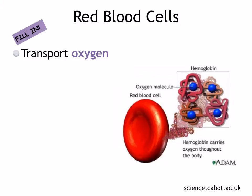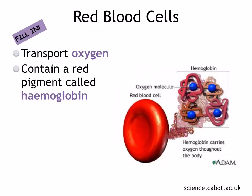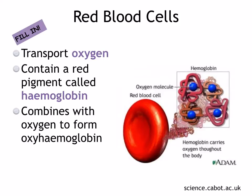Red blood cells transport oxygen. They contain a red pigment called hemoglobin, which is actually a protein. If you have a look at the molecule of hemoglobin, you'll notice that it's got iron in it — the blue circles represent iron. Hemoglobin combines with oxygen to form oxyhemoglobin.